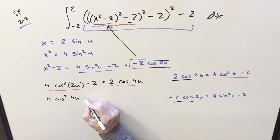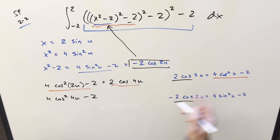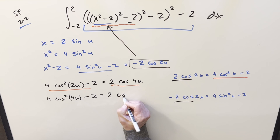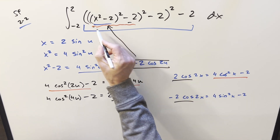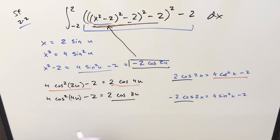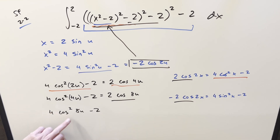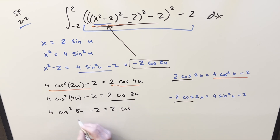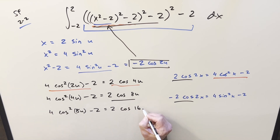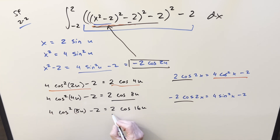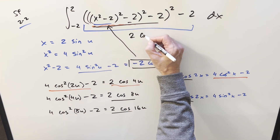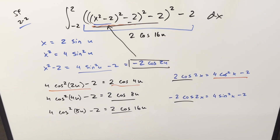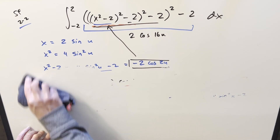Bringing in the minus two again, we're in this form, so we use the formula two cosine of double the angle and get two cosine 16u. So all we've done is determined that after the substitution, this whole nested expression simplifies to two cosine 16u. I'll clean up the board and do the full substitution to finish this off.